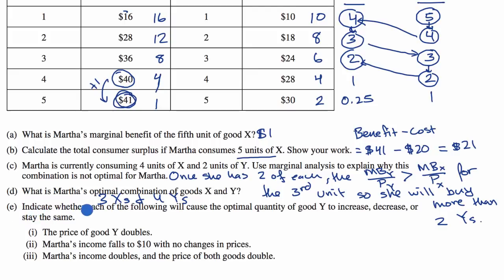Indicate whether each of the following will cause the optimal quantity of good Y to increase, decrease, or stay the same. The price of good Y doubles. Well, if the price of good Y doubles, then the marginal benefit per price of Y will go down. So she will buy less of Y. It would decrease. She would get less bang for her buck on Y. Martha's income falls to $10 with no price changes. If we go through the exercise we just did, her budget would run out much faster, so she would definitely decrease the number of Y's she would buy. So the Y's would decrease.